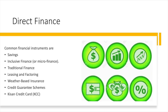Now we will be discussing about direct finance. Under this, there are some common financial instruments: Savings, Inclusive Finance or Microfinance, Traditional Finance, Leasing and Factoring, Weather-based Insurance, Credit Guarantee Schemes, and Kisan Credit Card. We will be discussing all of these one by one.